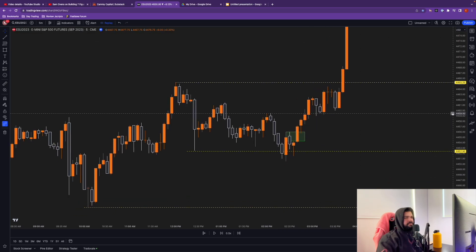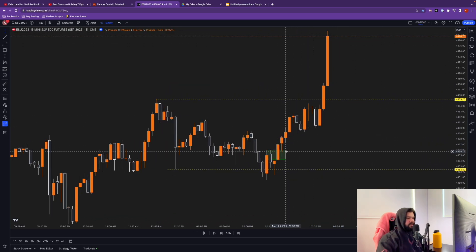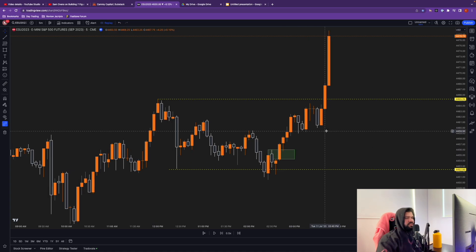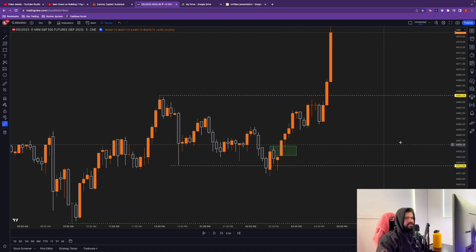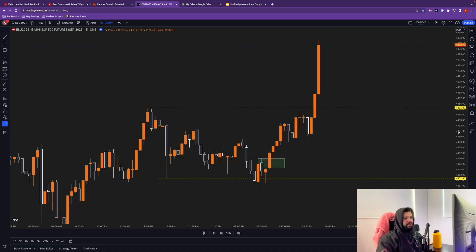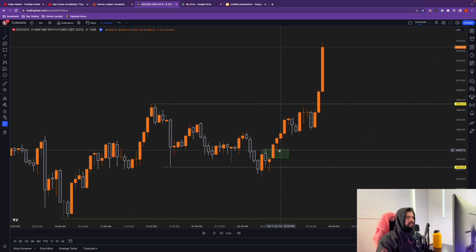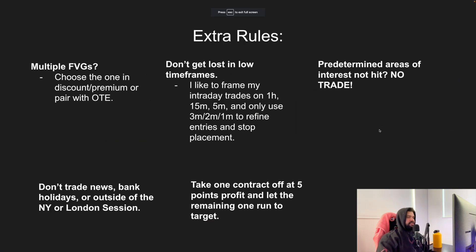I was hitting moves like this all week. The only day this week the model failed me was Wednesday, and that was because I was trading against the bias, against the trend. Don't do that - I have a video coming on how to determine bias. That is the 2022 model in action, nice and simple. Now some extra rules: the common question I get is what if there are multiple fair value gaps on that market structure shift - which one do you choose?